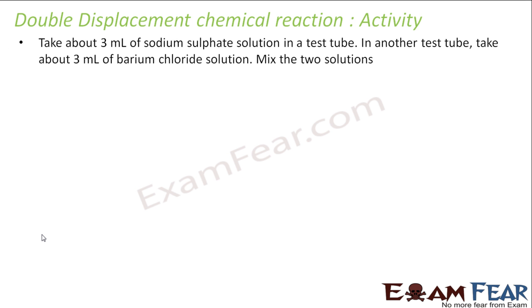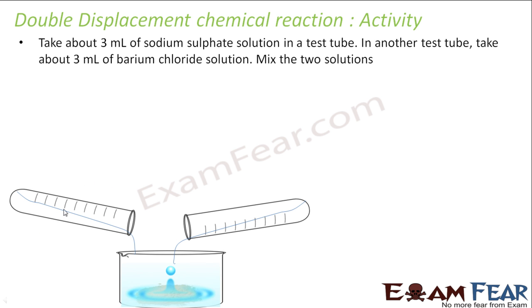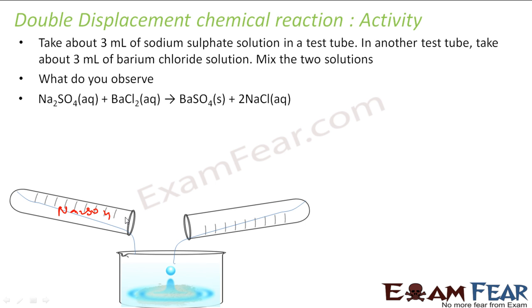We will take some activity for this. We will take 3 ml of sodium sulfate solution in a test tube. And another test tube will take 3 ml of barium chloride solution. We will mix both. So we have, in this case we have sodium sulfate. And in this case we have, in this case Na2SO4. And barium chloride we have in this. So we will mix both.